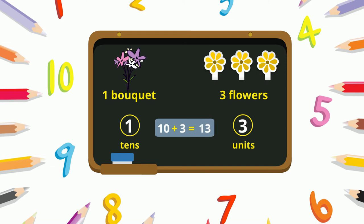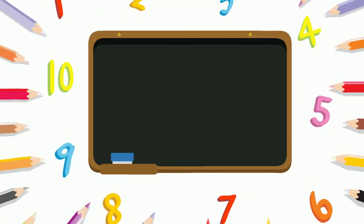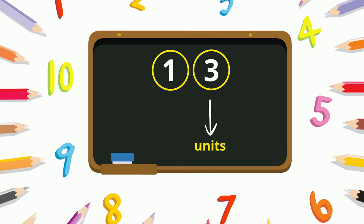Now to read the value of the digits in a number, you have to start reading from the right side. So in number thirteen, the first digit from the right side, that is three, is the units, and the digit next to it, that is one, is the tens. So in number thirteen there are three units and one ten.